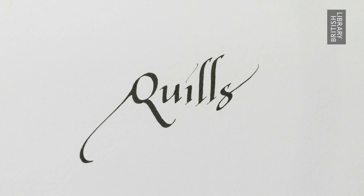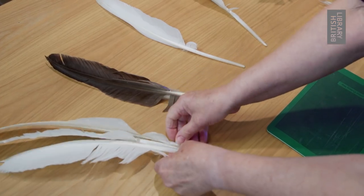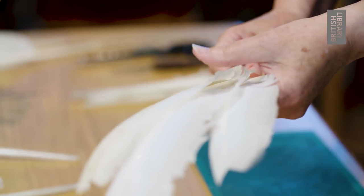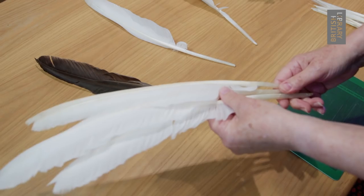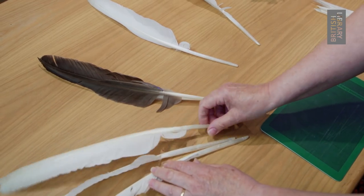The feathers that are used to make quills come from the wings of large birds like swans and geese. The white feathers here are from swans, and the darker ones are from Canada geese.